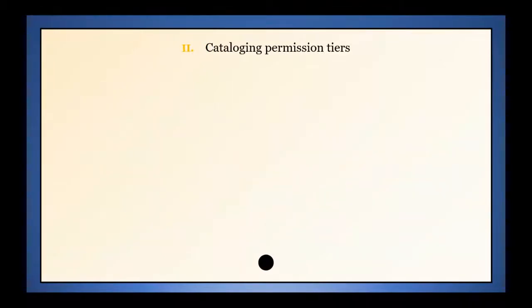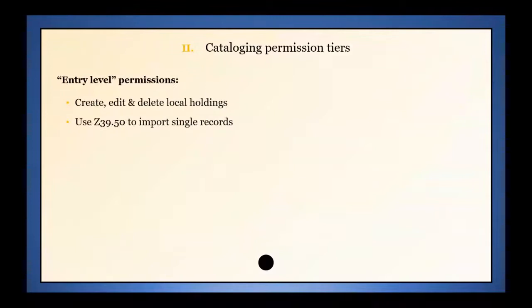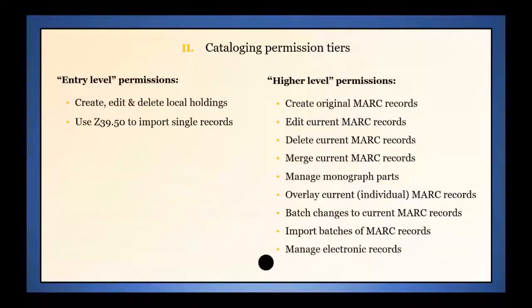First, with the structure of our cataloging permissions, with the way that things were, we basically had a two-tier system. If you hired a new cataloger at a SPARC library and you wanted to create a new staff account for them, you had two choices. You could either have them be at the lower level, where they could manage local holdings and they could import single records using Z39.50, or you could choose to let them do literally everything else: create original MARC records, edit current MARC records, delete MARC, merge MARC, manage monograph parts, overlay MARC records, do batch changes to records, import groups of MARC records, manage electronic records.